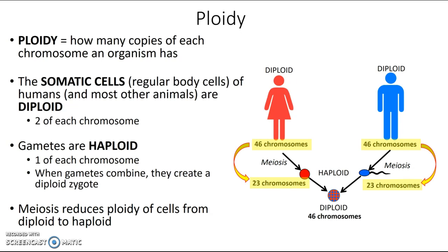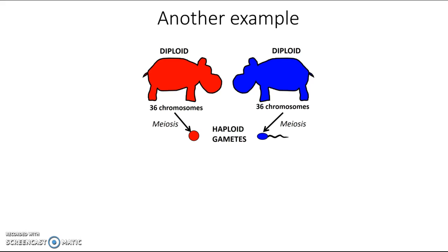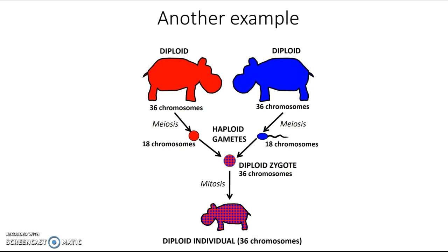Let's look at an organism with a different chromosome number for practice. Hippos, like humans, are diploid, but they have 36 chromosomes. When hippos produce gametes via meiosis, those gametes are haploid — 18 chromosomes each, one of each of 18 chromosome types. When those gametes combine via fertilization, they produce a diploid zygote with 36 chromosomes, which then develops via mitosis into a diploid individual with 36 chromosomes, just like its parents.